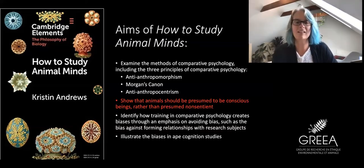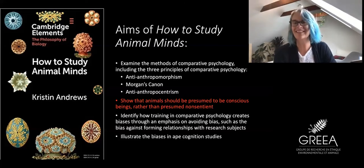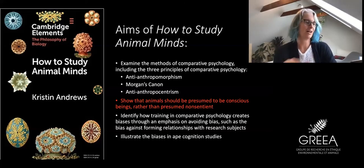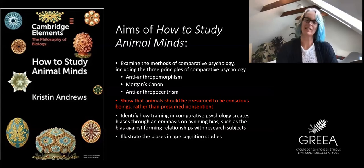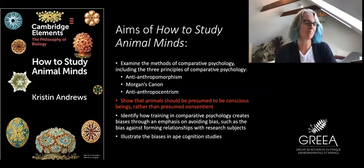One of the things feminist philosophy of science is really good at identifying is that when humans are doing science, they are bringing their human biases. Bias is inevitable — it's a perspective. What we need to do rather than try to avoid biases is to acknowledge the biases that exist and how our choices about how we're doing the science are creating biases. In the fourth chapter, I illustrate the biases in ape cognition studies in both the field and the lab. Today I'll just talk about the consciousness piece.